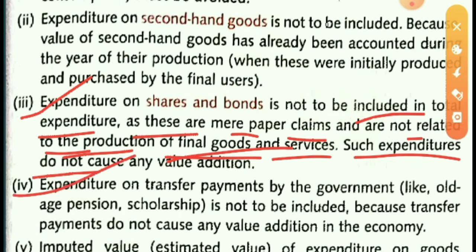Fourth precaution: expenditure on transfer payments by the government — like old-age pensions and scholarships — is not to be included, because transfer payments do not cause any value addition in the economy.